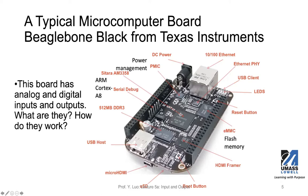The BeagleBone Black has a few USB interfaces — one USB host and one USB client port — as well as a DDR3 memory chip important for the operating system. It also has a serial interface running the RS-232 protocol, and both analog and digital inputs and outputs, with certain pins configurable as analog ports.